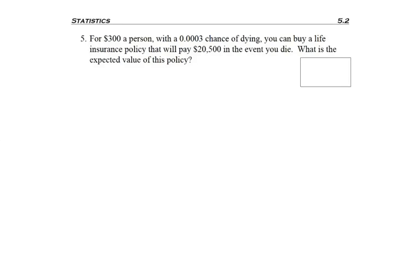And here's another expected value problem that's a little bit of a twist on the ones that we've just been doing. This one says, for $300, a person with a .0003 chance of dying, it doesn't say whether it's a percent or not, but don't worry about that. You can buy life insurance policy that will pay $20,500 in the event you die. And we get that, what is the expected value question? So not a probability question, an expected value question.